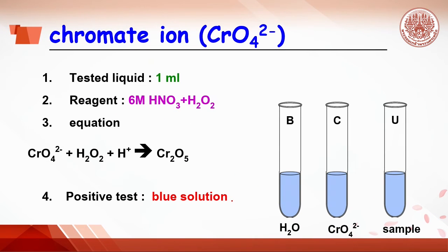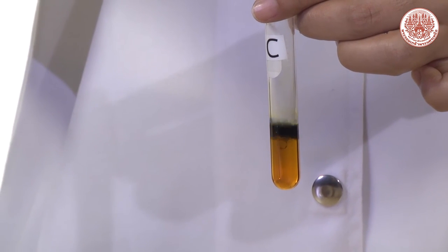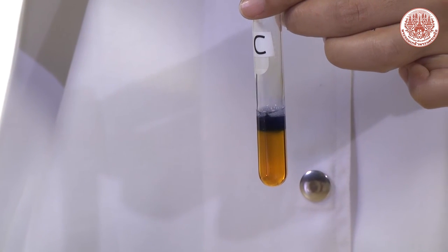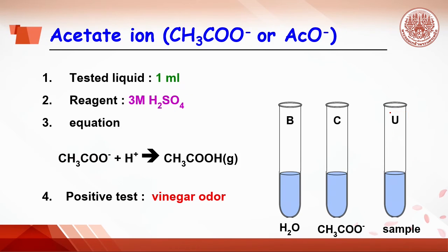Next comes chromate ion test. Do the same by adding water, chromate ion and sample, 20 drops each. Then add nitric acid and hydrogen peroxide. The control tube will show the positive test where the solution turns blue. Observe the color change in the U tube.